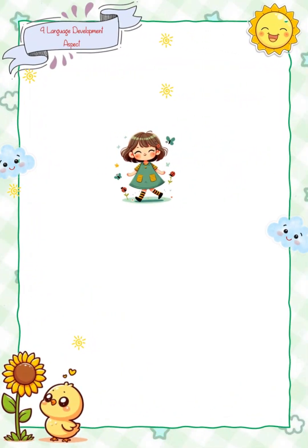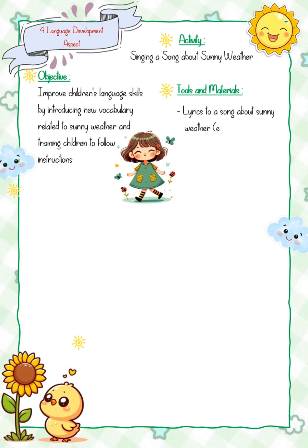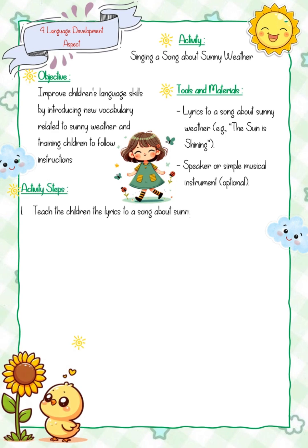Activity four, language development aspect: singing a song about sunny weather. Objective: improve children's language skills by introducing new vocabulary related to sunny weather and training children to follow instructions. Tools and materials: lyrics to a song about sunny weather, e.g. 'The Sun is Shining,' speaker or simple musical instrument (optional).